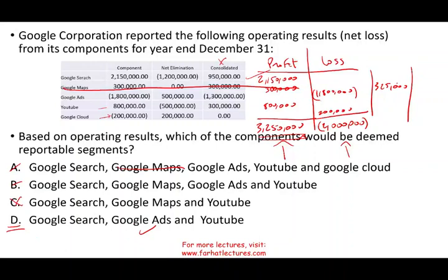YouTube has 800,000 — that exceeds 325,000, so YouTube is included. Google Cloud has losses of 200,000; the absolute value is 200,000, which is less than 325,000 — so Google Cloud is excluded. As I suspected, the answer is D.